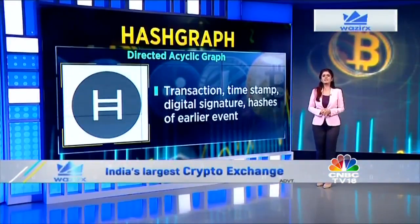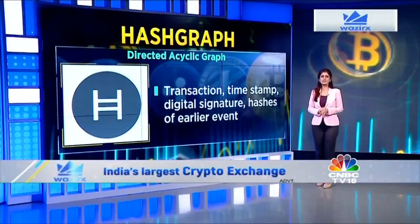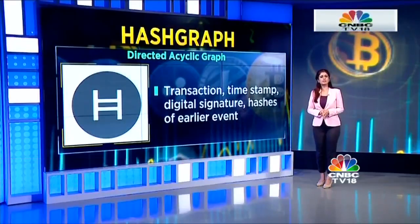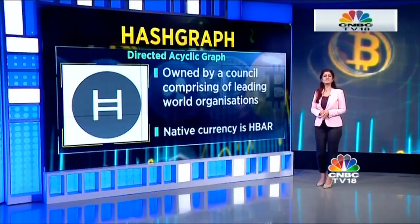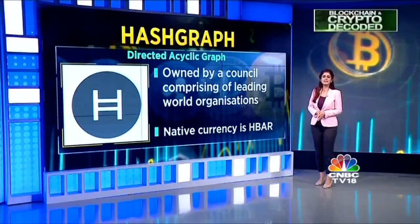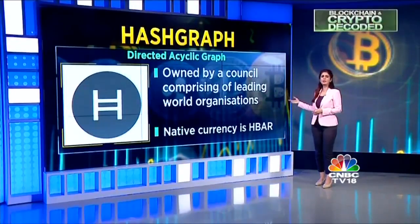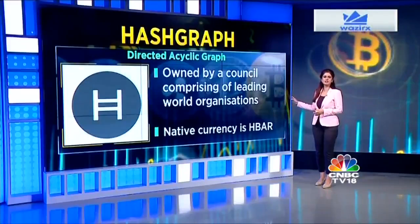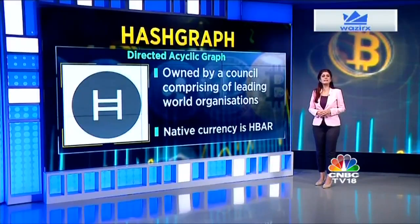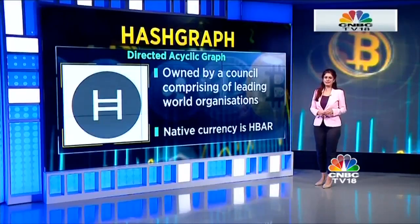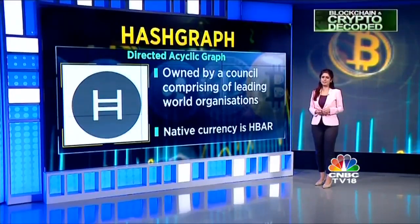Hashgraph is currently patented and the only authorized ledger is Hedera Hashgraph. Ownership of Hedera Hashgraph is by a governing council comprising the world's leading organizations like Google, IBM, Boeing, and Tata Communications. The native cryptocurrency of Hedera Hashgraph is HBAR. Hedera is considered a third-generation public ledger, with the first generation being Bitcoin and the second generation being Ethereum.